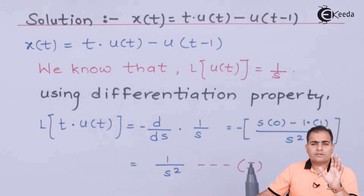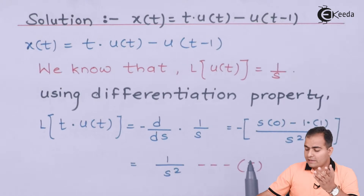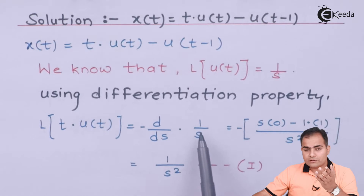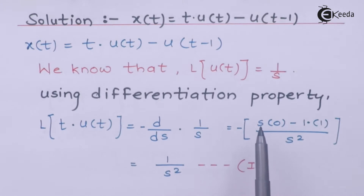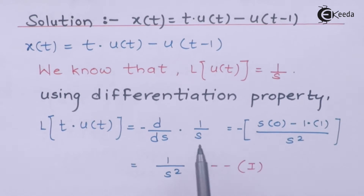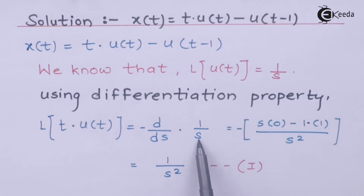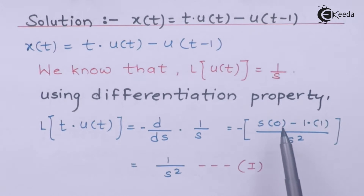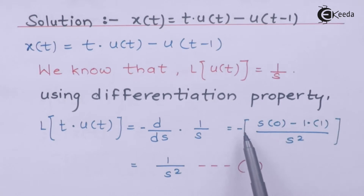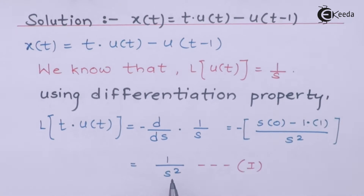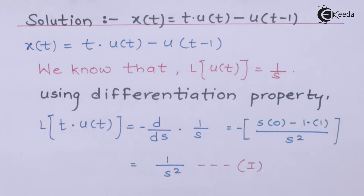The differentiation formula for u/v is: [v·(du) minus u·(dv)] / v². So we have s written as-is and differentiation of 1 is 0, minus 1 written as-is and differentiation of s is 1, with s² in the denominator. In the numerator, s times 0 becomes 0, and minus times minus becomes plus. The result is 1/s². So whenever you have t·u(t), you can directly write the Laplace transform as 1/s² once you know this result.